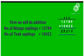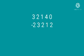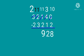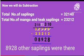Now we will do Subtraction. Total number of saplings is 32,140, and the total of mango and tick saplings is 23,212. So we will subtract. From 0 we cannot minus 2, so we borrow: 4 becomes 3 and 0 becomes 10. 10 minus 2 is 8. 3 minus 1 is 2. From 1 we cannot minus 2, so borrow: 2 becomes 1 and 1 becomes 11. 11 minus 2 is 9. From 1 we cannot minus 3, so borrow: 3 becomes 2 and 1 becomes 11. 11 minus 3 is 8. 2 minus 2 is 0. So the answer is 8,928 other saplings.